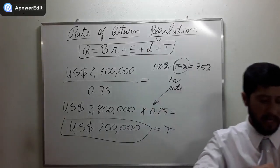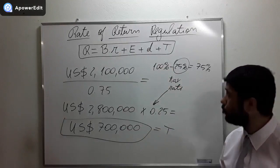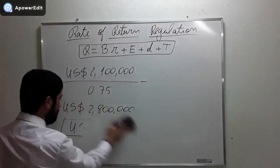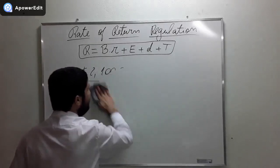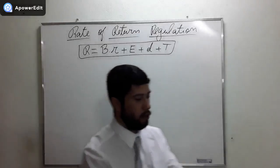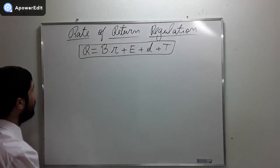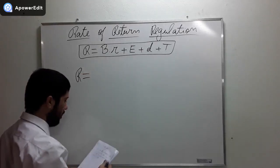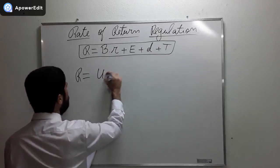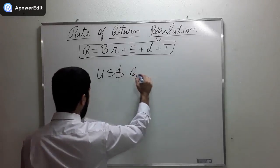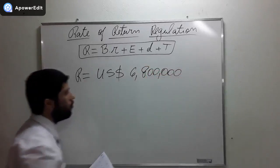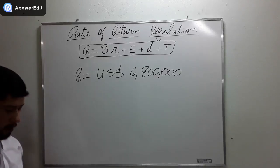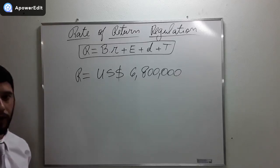Now that we know everything, now that we have discovered all of the variables, we can use the expression. We are going to use the expression and discover the revenue requirement. The revenue requirement, when we plug all the variables aforementioned, we discover that the revenue requirement for this utility is $6,800,000.